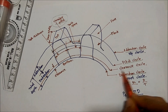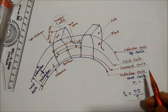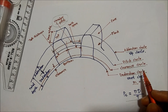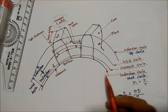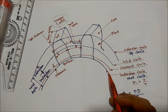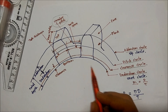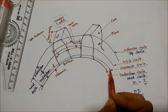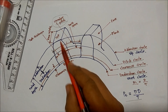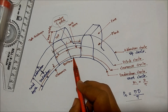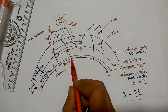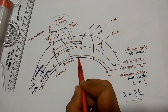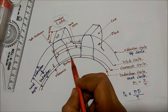The clearance circle is a circle passing through the top of the meshing gear teeth. At that point, the tip of one gear's tooth meets the root of the other.